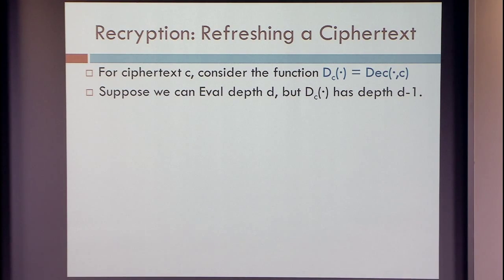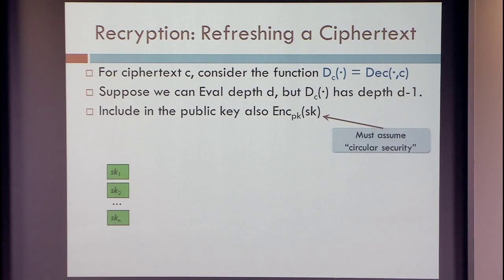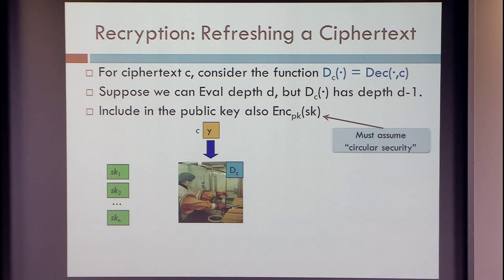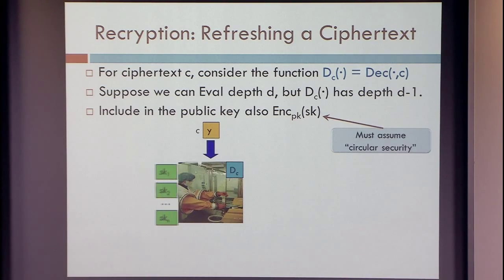Suppose this function has depth just slightly below d — let's say d minus 1. Then what we can do is include in the public key also an encryption of the secret key. You have to make the assumption that the cryptosystem is still secure, so you have to assume what we call circular security. We have here the encryption of the secret key bits — these are all green encryptions with little noise. Now we have our ciphertext, an evaluated ciphertext we can no longer compute on. But we can write down the description of the function D sub-c and pass this encryption through the evaluation procedure for this function.